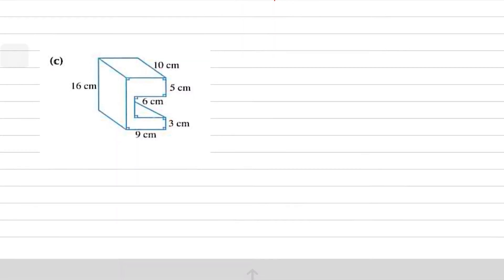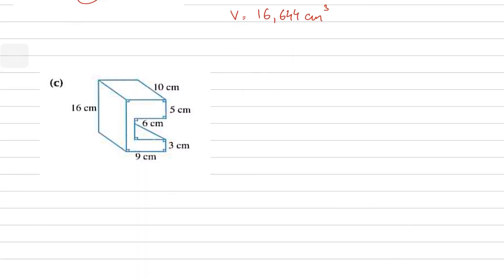This next example is slightly more technical. The cross section is an irregular shape. To calculate its area, we treat the whole cross section as a complete rectangle of 16 by 9, then subtract the small interior rectangle that needs to be removed.